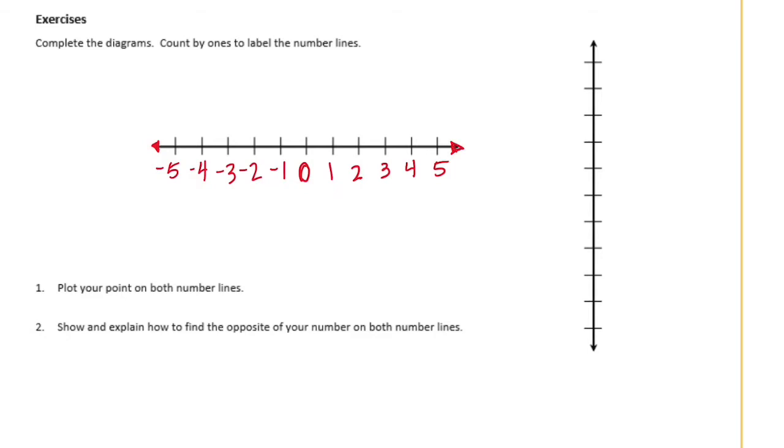So let's do it for this vertical line too. So we have 0, and then up is going to be positive numbers: 1, 2, 3, 4, 5, and down will be negative: negative 3, negative 4, and negative 5.